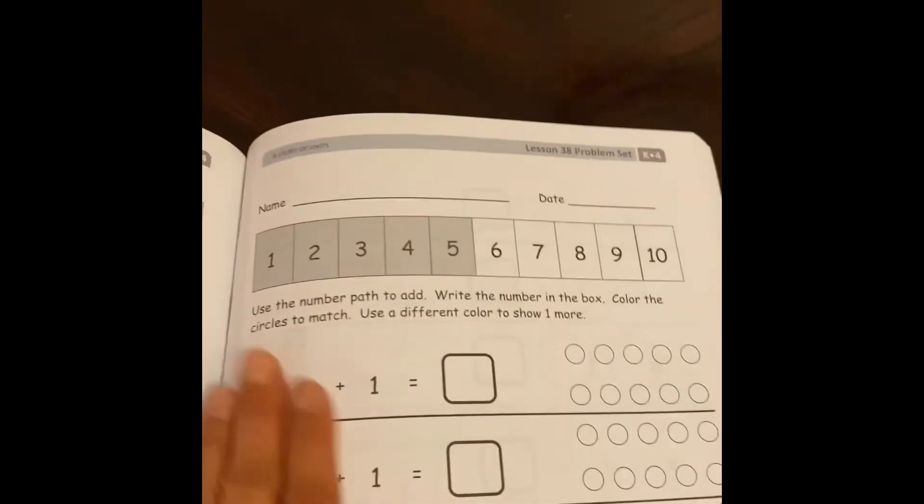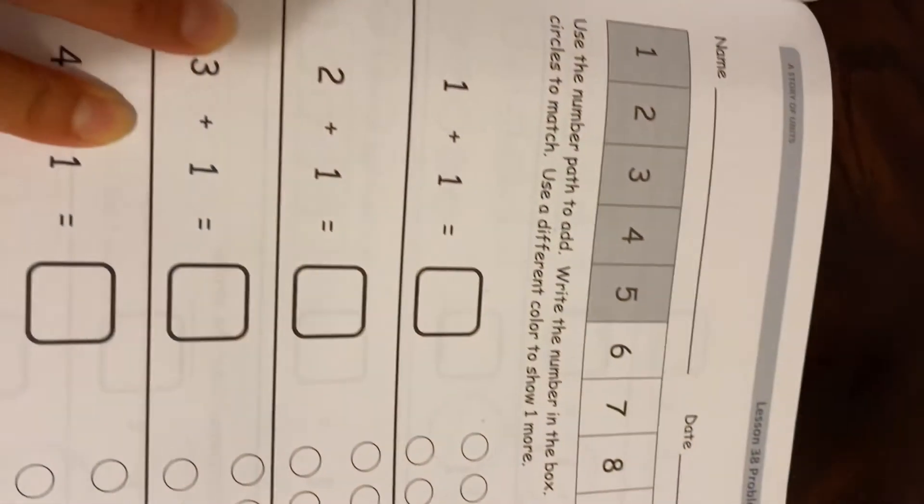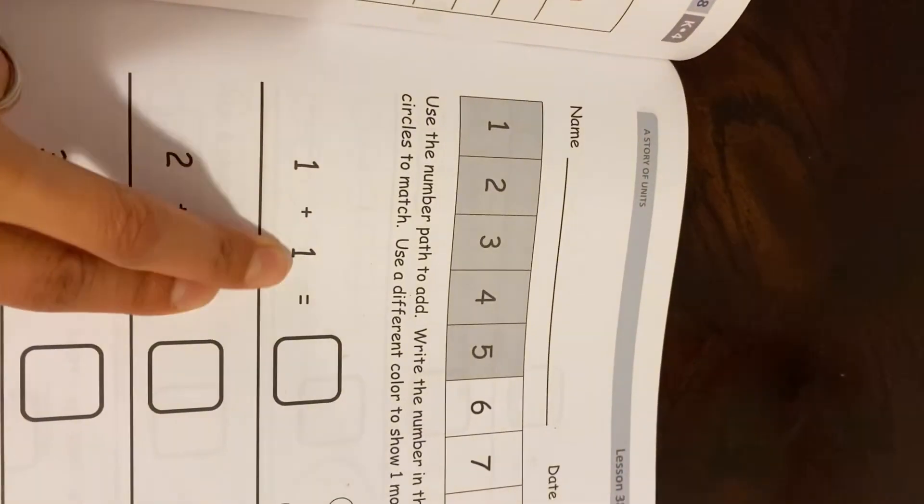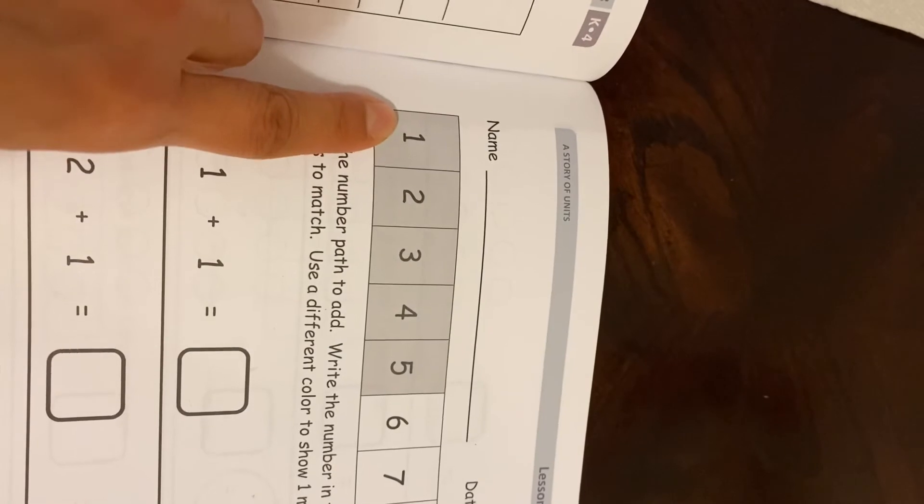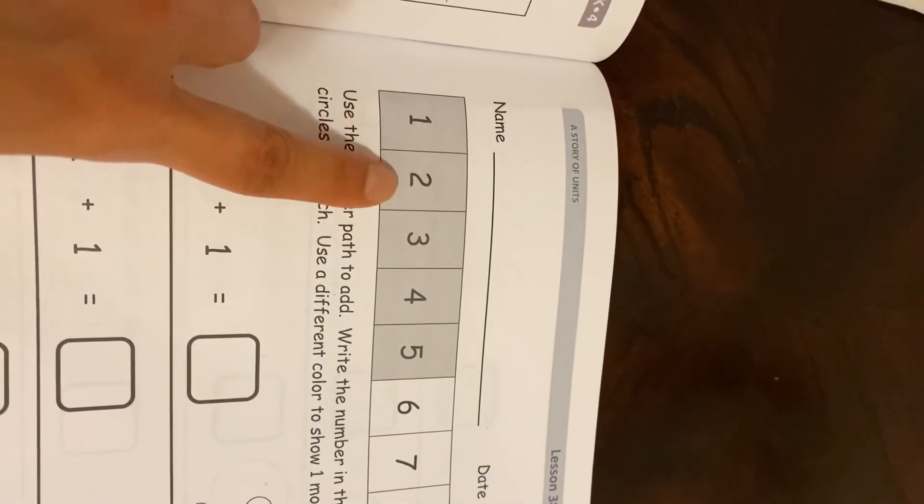Very good. You can continue practicing that as well using your fingers. Good. So here we're going to do the one plus one equals, right? So looking at the number path, you can do one plus one more and it equals to what? Two.